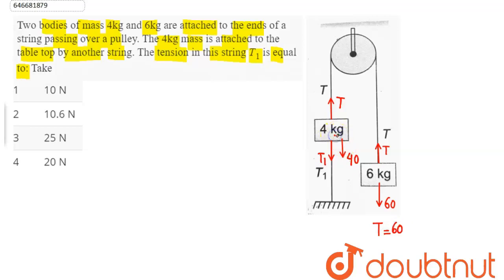Now, substituting this value of tension in the 4 kg block system, we have T equals T1 plus 40.